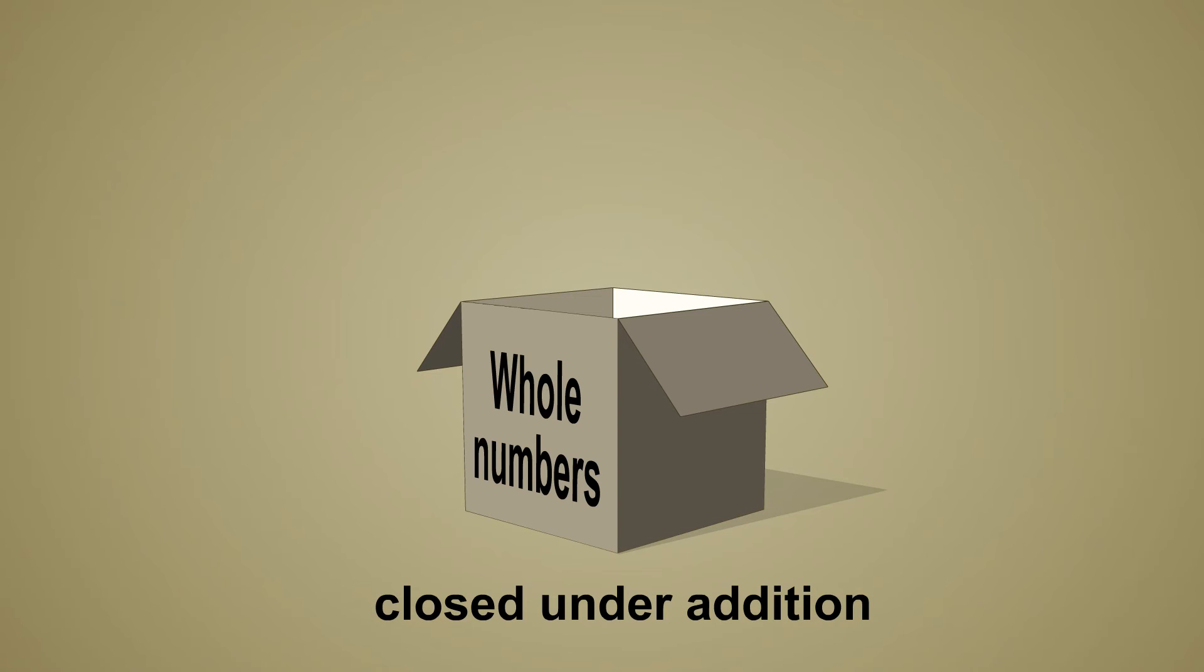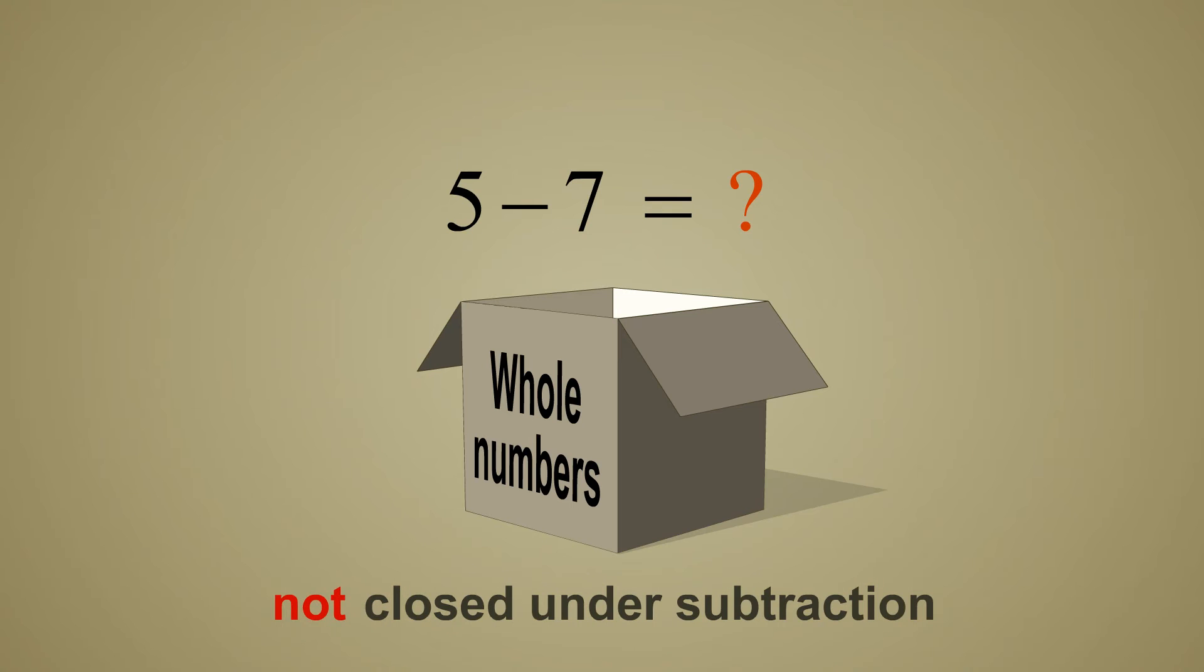But are the whole numbers closed under subtraction? If you subtract a larger whole number from a smaller whole number there is no whole number which can represent the result. This is because we would need a negative number to represent the result and whole numbers do not include negative numbers. Therefore, the whole numbers are not closed under subtraction.